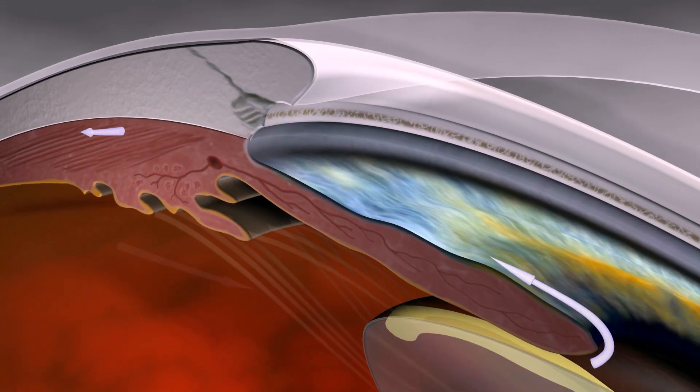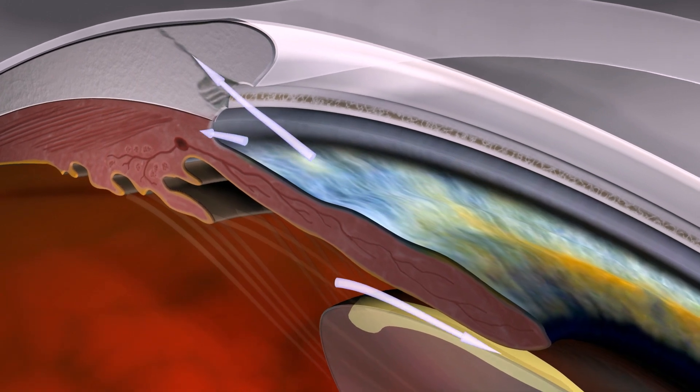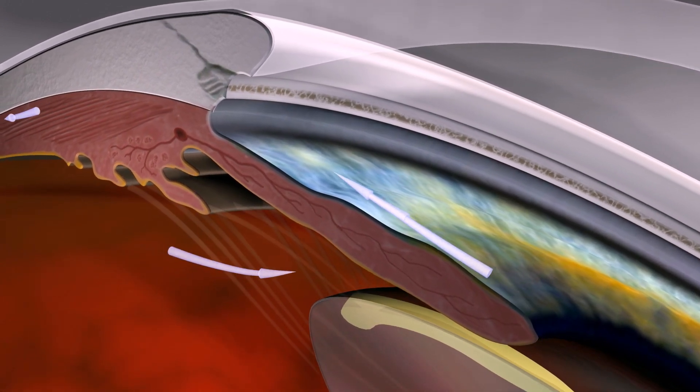In a healthy eye, continuous drainage of aqueous fluid keeps intraocular pressure at a normal level.